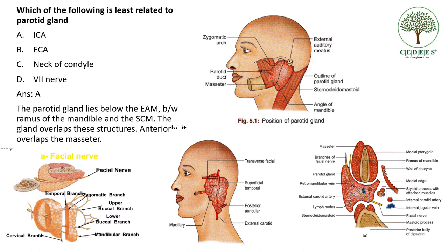Anteriorly even the masseter muscle is being overlapped. This is the posterior body of the ramus and this is the neck of the condyle, so the anterior surface of the parotid gland is closely related to the neck of the condyle. The facial nerve divides the parotid gland into the superficial and deep parts. The external carotid artery enters the deep part of the parotid gland and divides into its terminal branches — superficial temporal and posterior auricular. The only structure left is the internal carotid artery, which is outside the parotid gland, so option A is the correct answer.